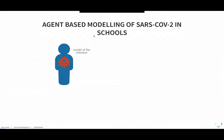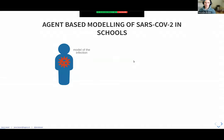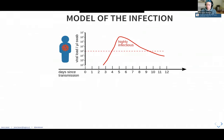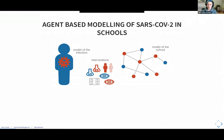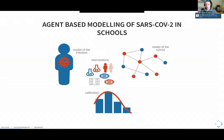Let me walk you through the basic components of the approach and the model we are working with. We are using an agent-based model of SARS-CoV-2 spread in schools, which is composed of first a model of the infection in an individual, then a contact network model of the school. On top of that, we can add a number of interventions such as wearing masks, regular screen testing, cohorting classes, or ventilation. And then there is the calibration step where we tune the parameters of our model such that it reflects the observations in reality as closely as possible.